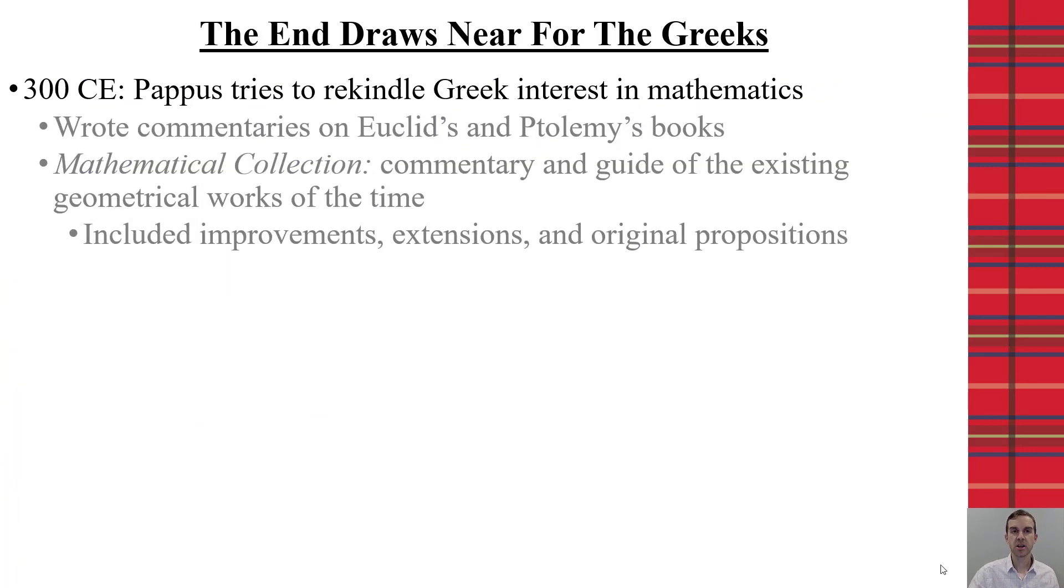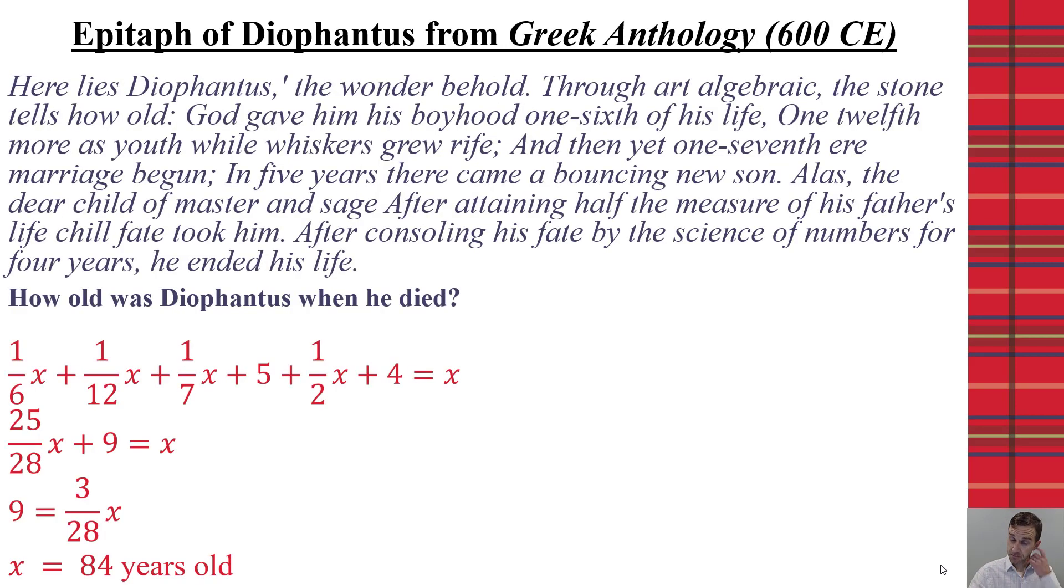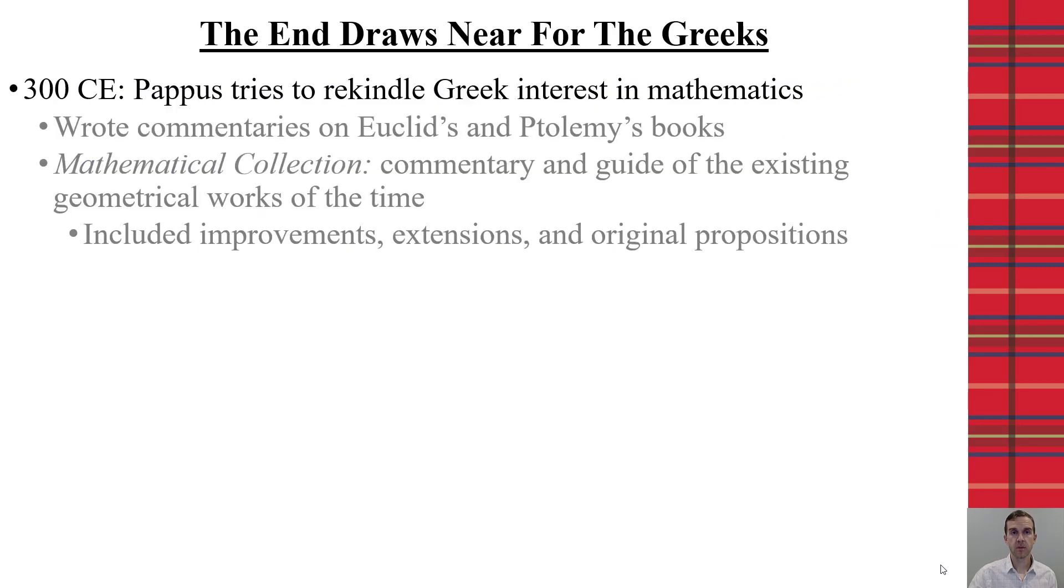Now, as we get to 300 CE, we see that the Greeks and their significant improvements in mathematics and science starts to draw to a close. However, there are still mathematicians and scientists that were trying to push the Greeks forward at this time. For example,